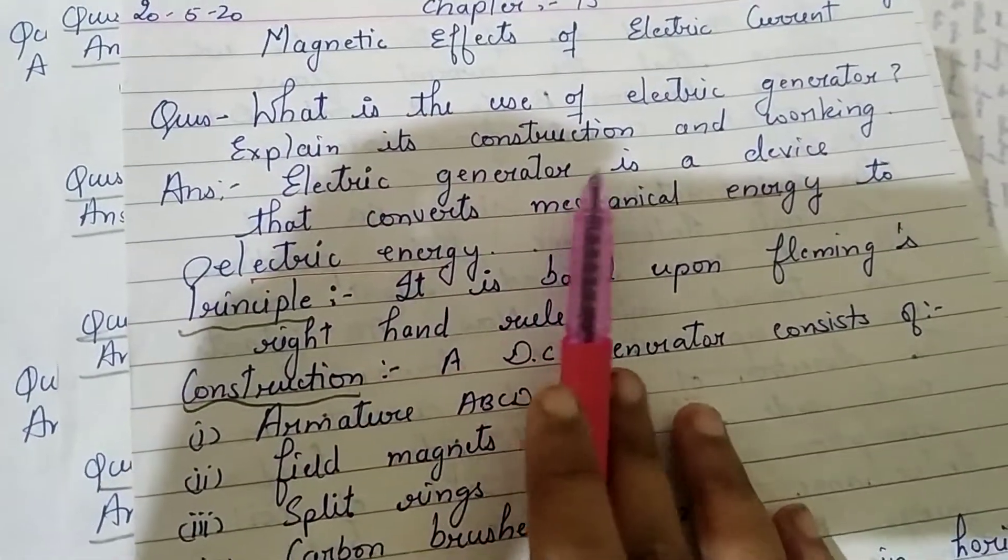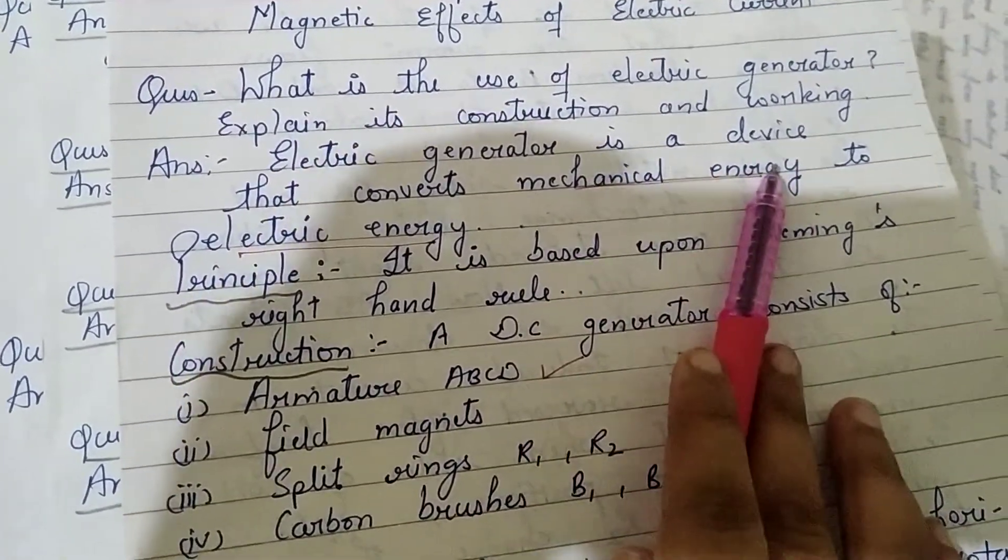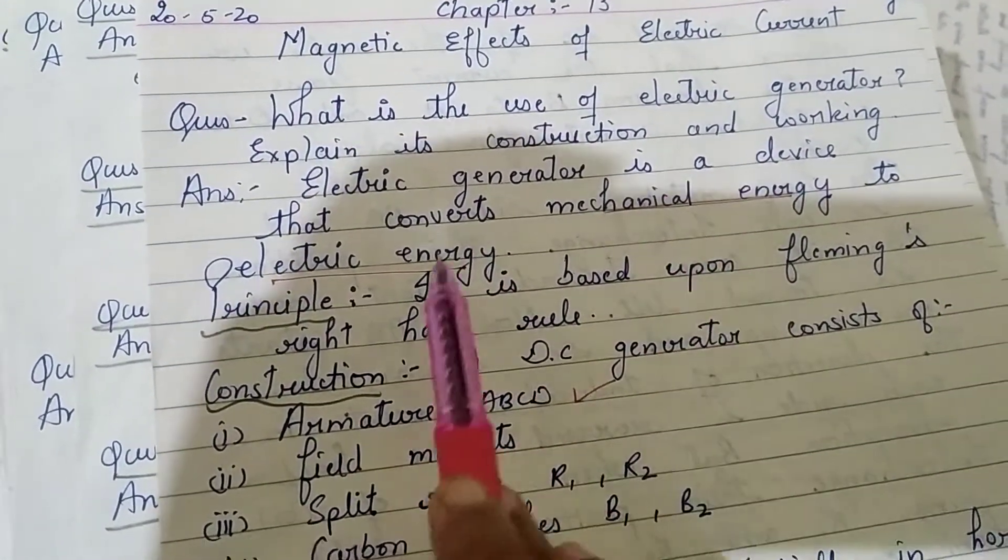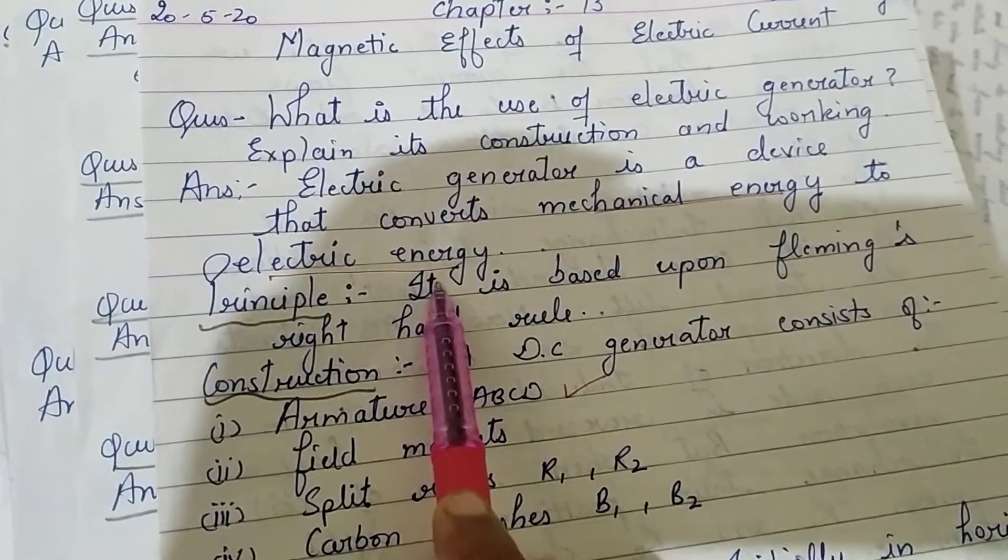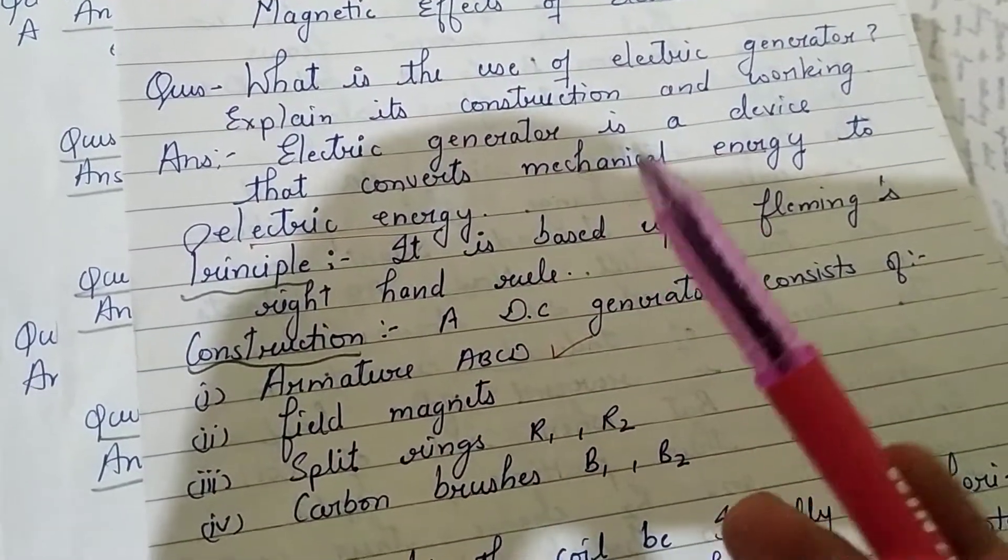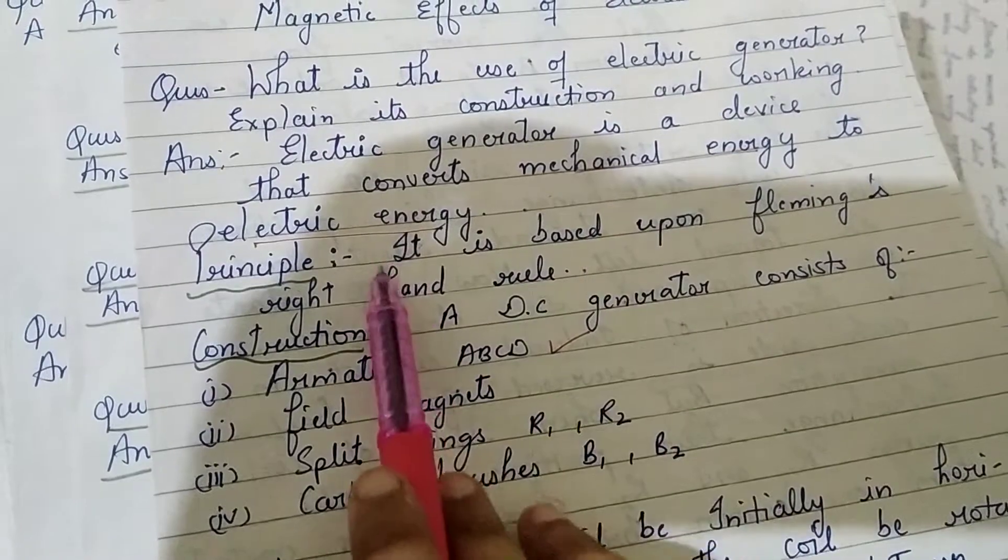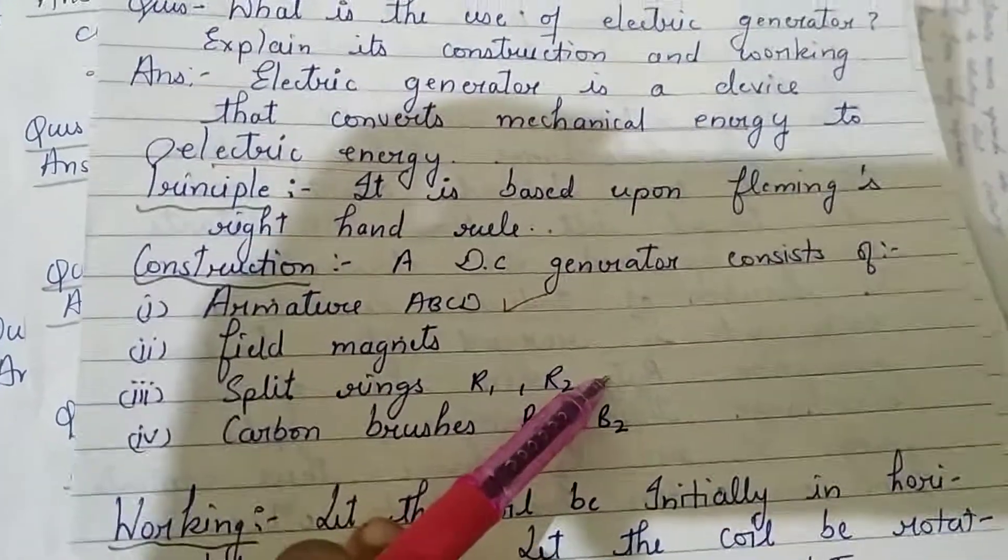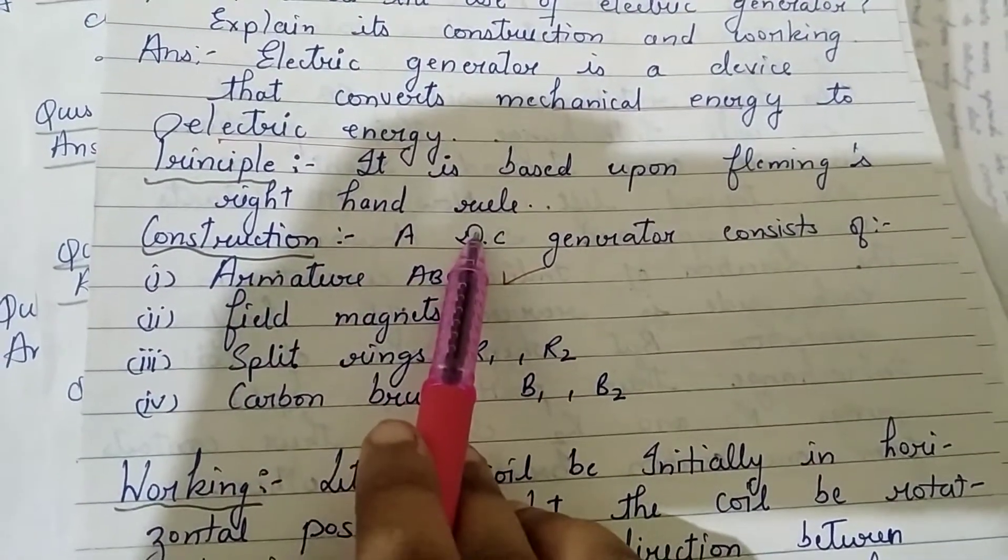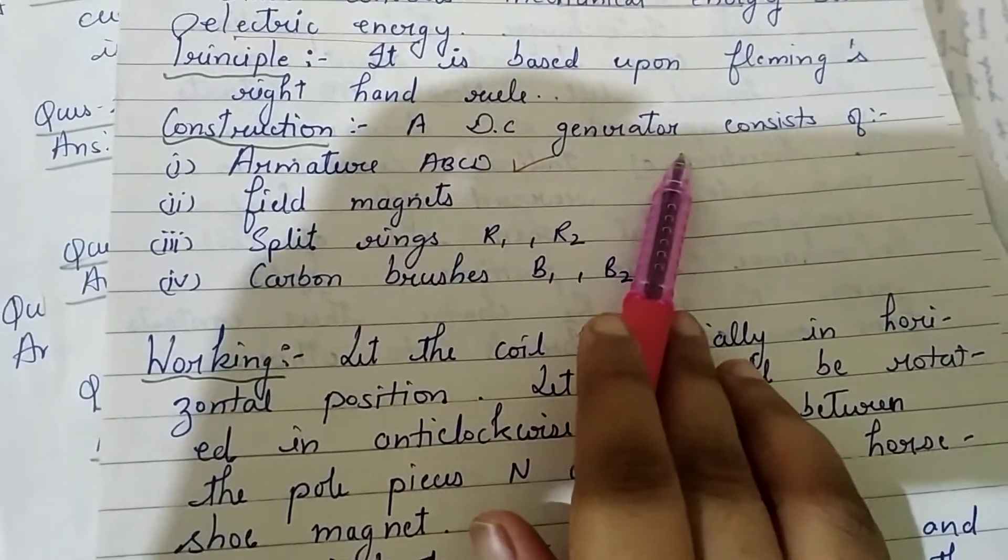First question is: what is the use of electric generator and explain its construction and working? So electric generator is a device that converts mechanical energy into electrical energy. It is based on the principle of Fleming's right hand rule.